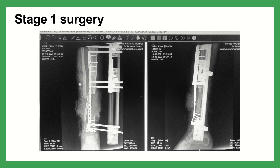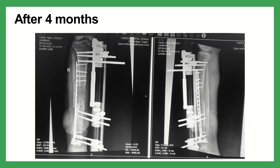Intraoperatively, the loose bone pieces were removed to create a segmental defect. The tibia was maintained to length and alignment using an anterolateral plate. A mid-shaft corticotomy was done for proximal-to-distal bone transport using an anteromedial rail fixator.